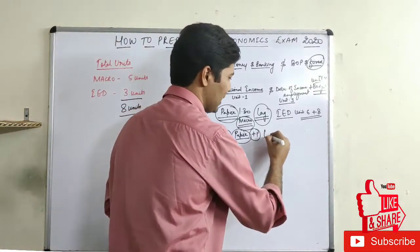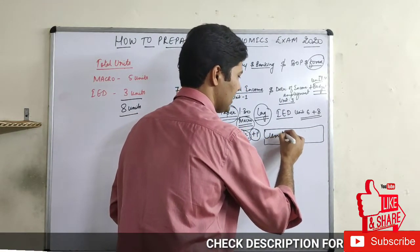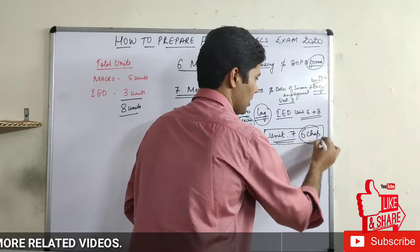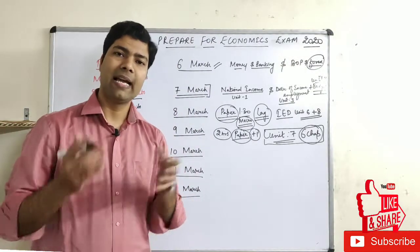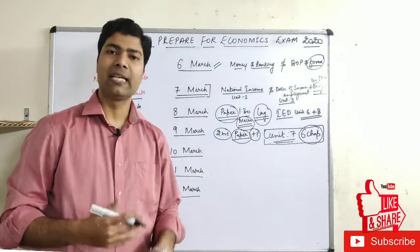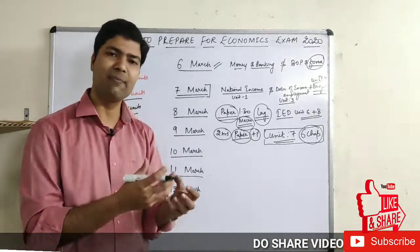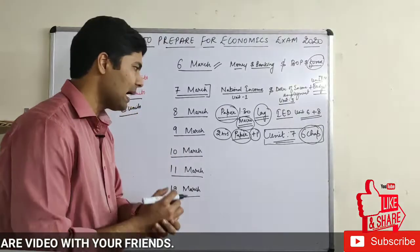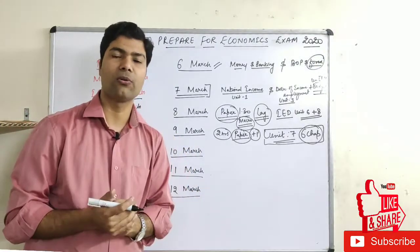After that, focus on IED unit number 7, which has a total of 6 chapters — poverty, human capital formation, infrastructure, rural development, environment, and similar chapters. It may seem difficult at first glance, but since these are related chapters, you can manage them easily. You'll see that within 3 days you've finished both IED and macro.